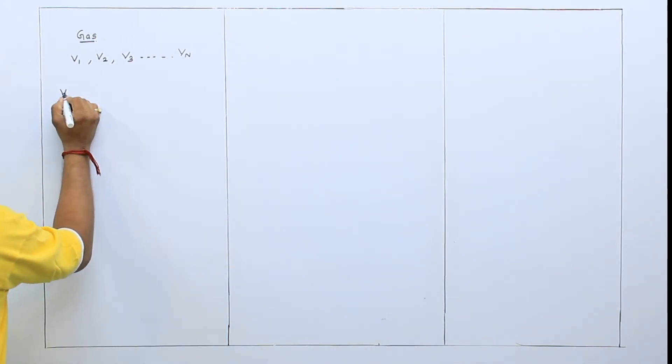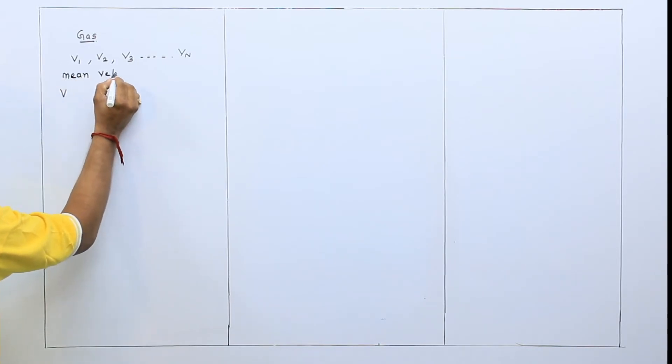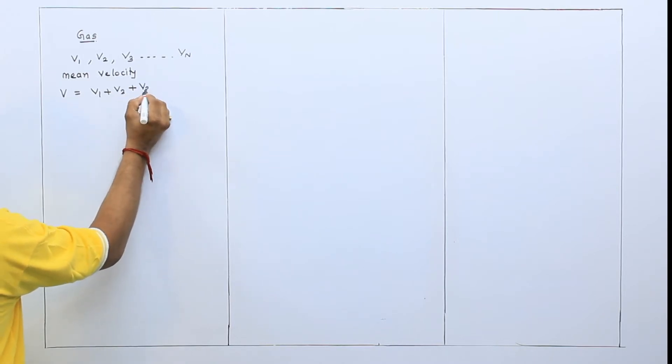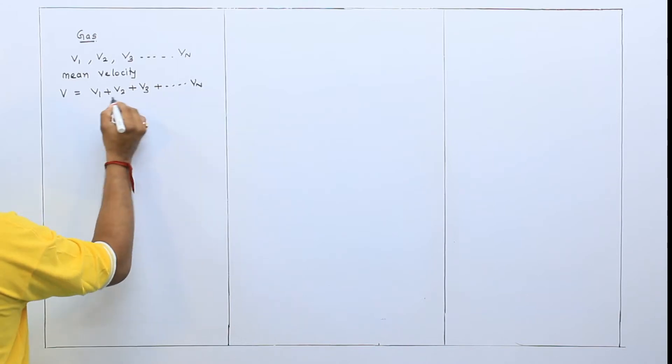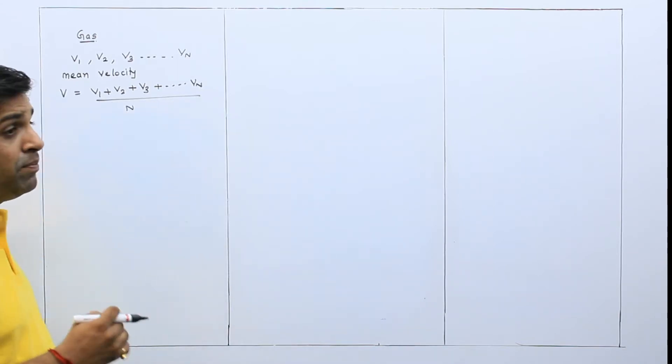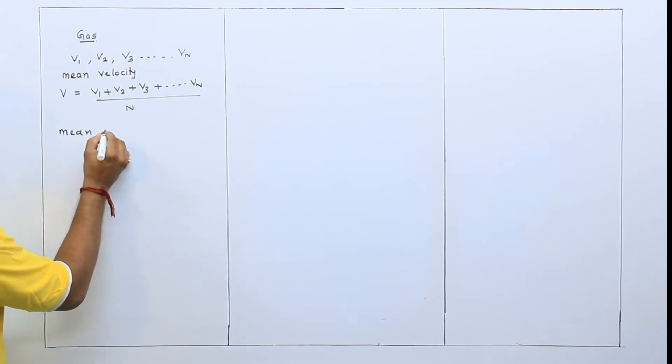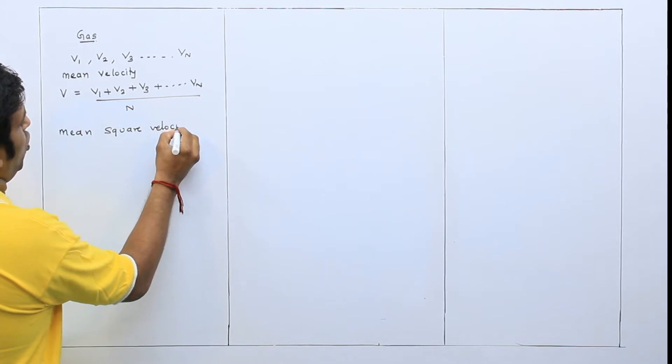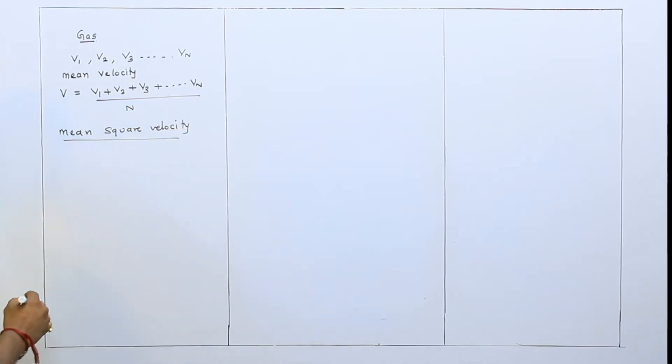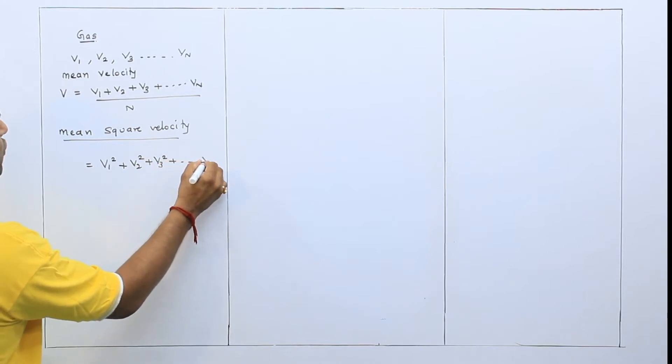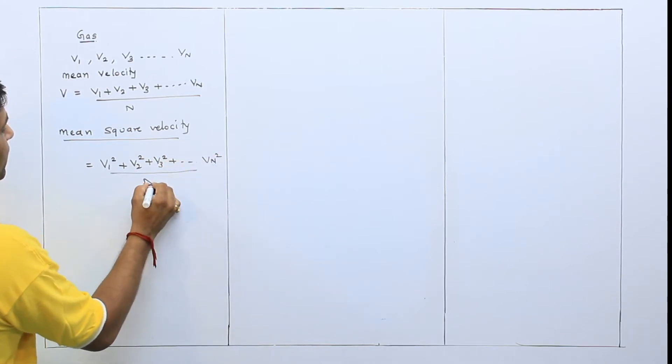If I want to find average, so what is the mean velocity? Mean velocity will be addition of all. What is the mean velocity? Mean velocity is v1, v2, v3 and so on, v3 square and vn square upon n. This answer will be v bar square.